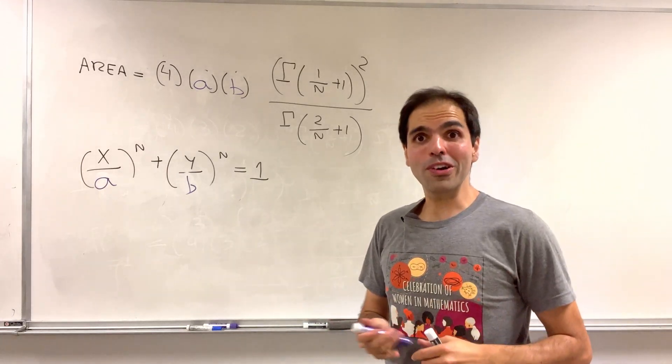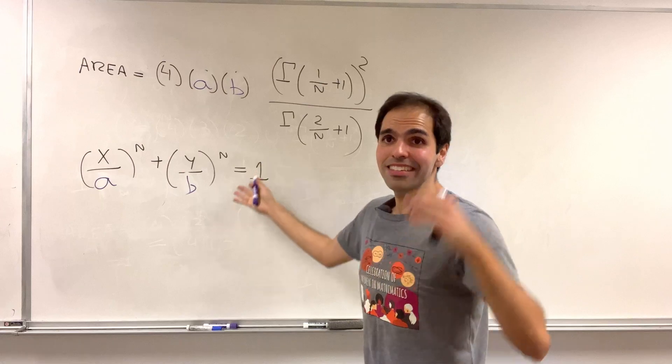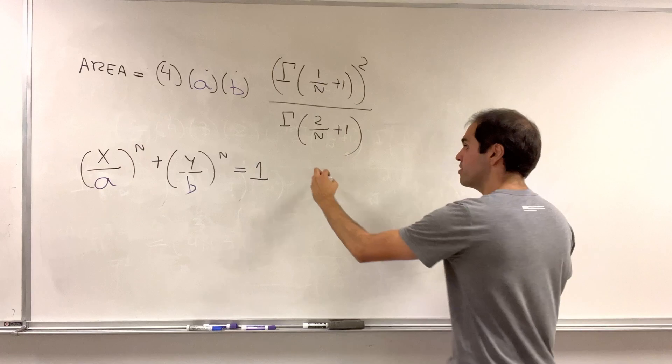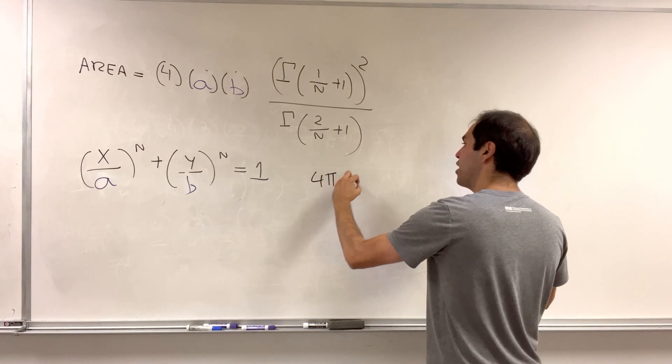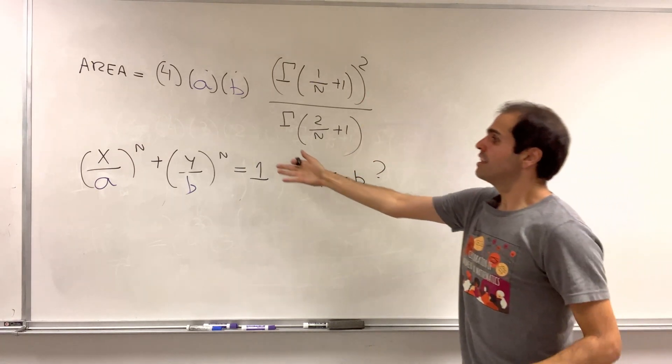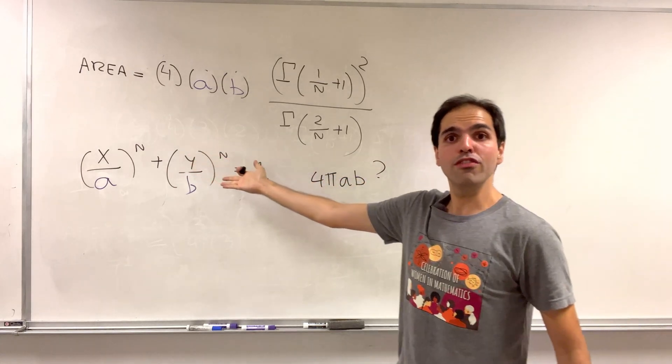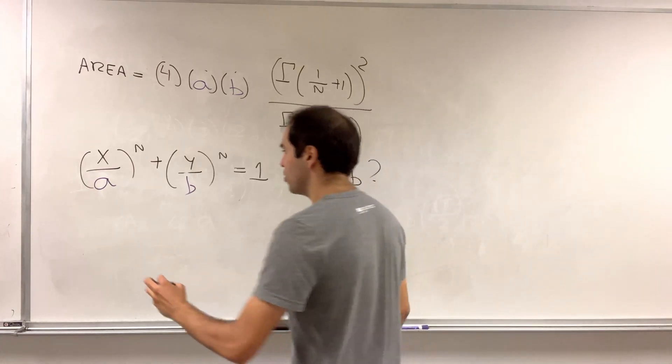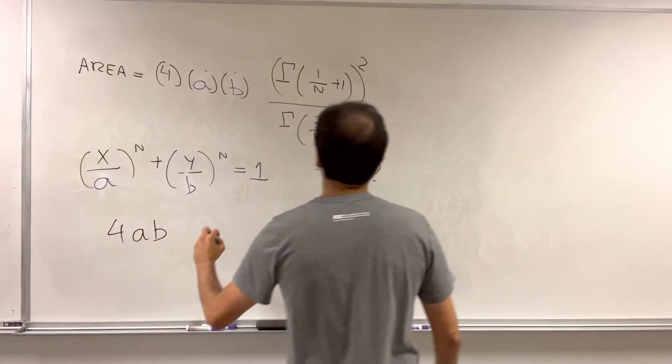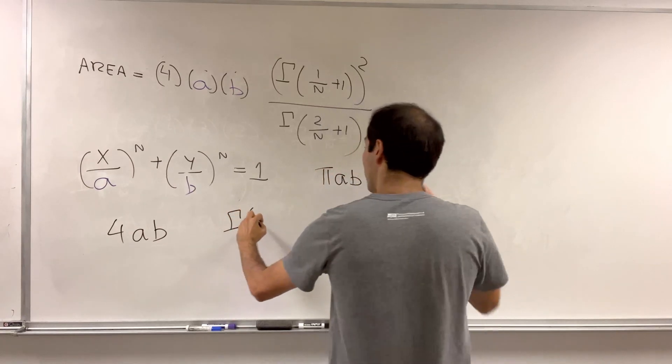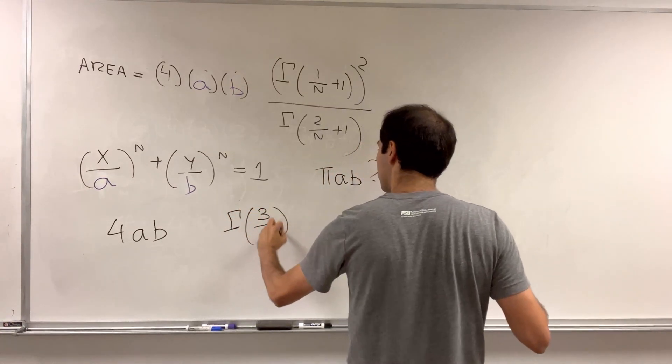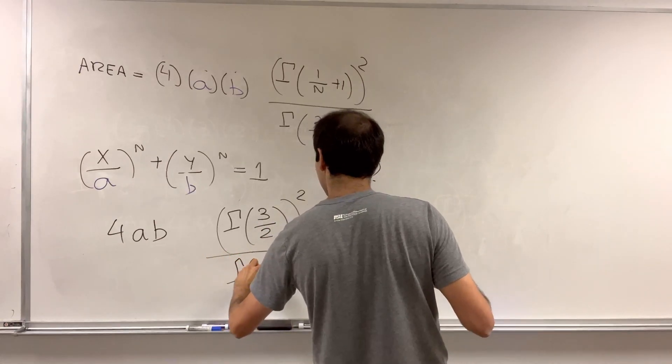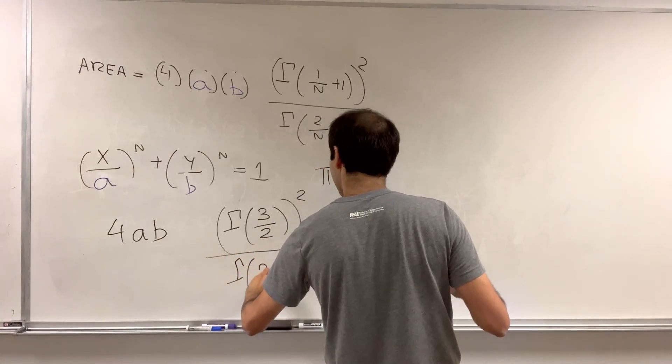Here's a more interesting question. Does this agree with the definition of the area of a regular ellipse, which is just π ab? Well, let's see. The regular ellipse would be for n equals 2. So let's see what happens when we plug in n equals 2. Then we get 4ab times gamma of 1 half plus 1, which is 3 halves, so 3 halves squared over 2 halves plus 1, so it's 2, gamma 2.